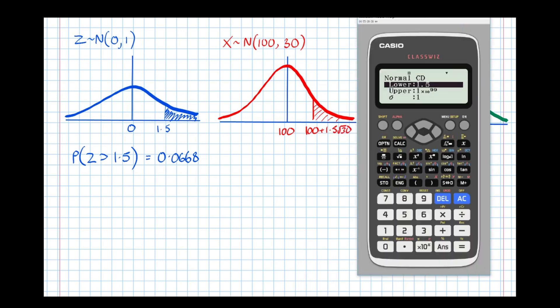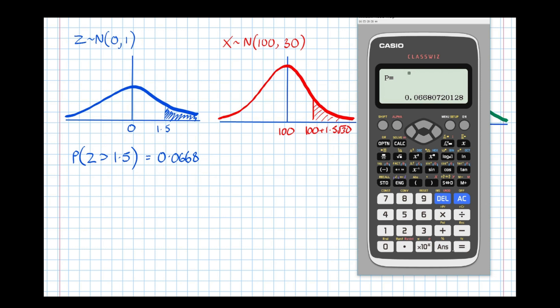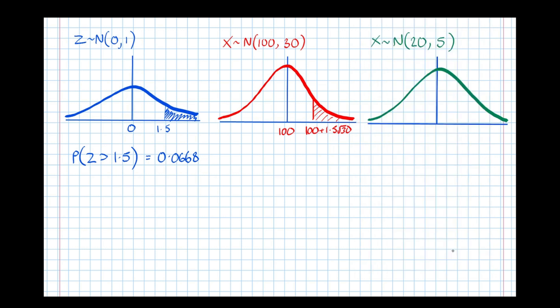Let's type it in the calculator. The lower bound is 100 plus 1.5 root 30, the upper bound is still 10 to the power of 99, our standard deviation is root 30, and our mean is 100. Hopefully we get the same probability — and yes, 0.0668.